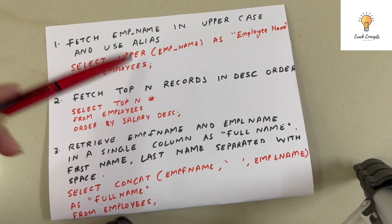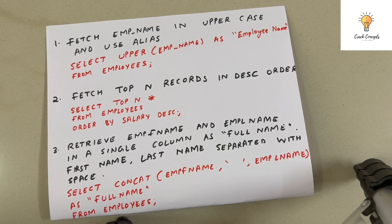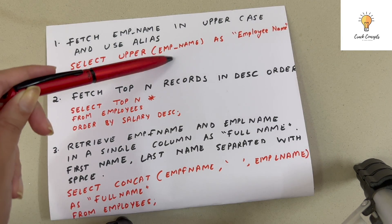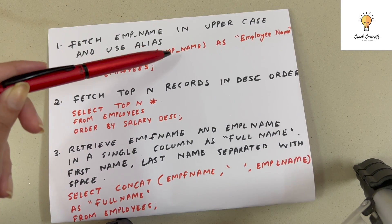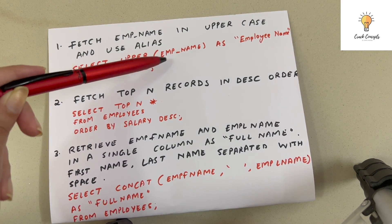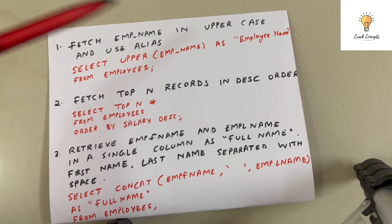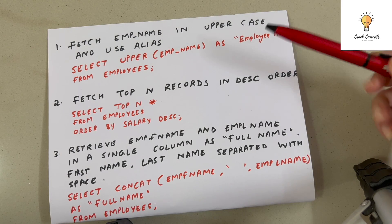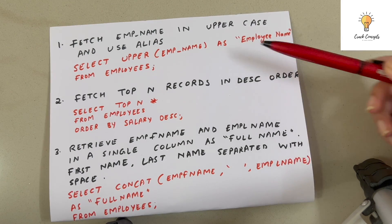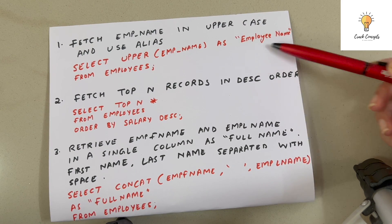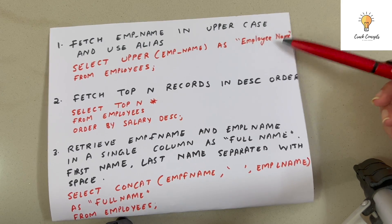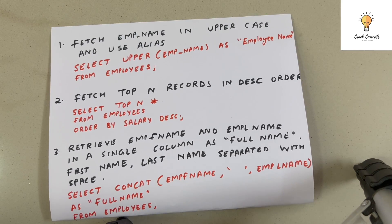If you want to convert to lowercase, use LOWER. So: SELECT UPPER(emp_name) AS employee_name — here we use the alias AS, and whatever name you give will become the column name, in this case 'employee name'.